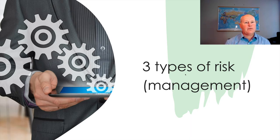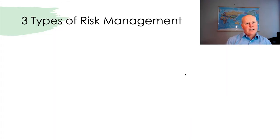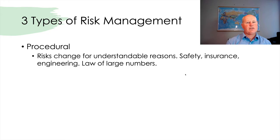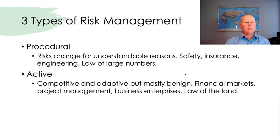I want to talk about three types of risk management. I did make these three types up, but I think you'll see some use in them. The first I call procedural — these are risks we manage through procedural approaches, risks that we understand and can influence: things like safety, insurance, engineering. We know we can build a gas plant or oil rig based around mean time between failure of valves. This is driven by the law of large numbers — the more data we have, the better we can manage it.